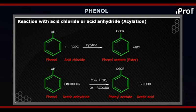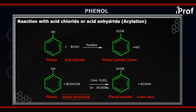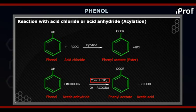Similarly, we can have the formation of phenyl alkenoate when you react phenol with acid anhydride, but this time in the presence of H2SO4. The product formed is phenyl alkenoate, and we also get RCOOH, that is carboxylic acid, as a byproduct.